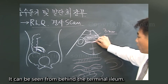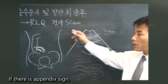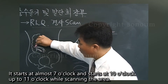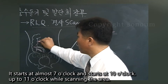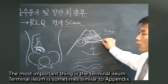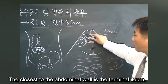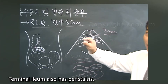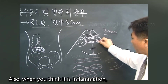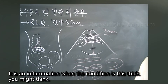The appendix can be seen from behind the terminal ileum, but it is difficult to observe under normal conditions. Orient the probe scanning from almost 7 o'clock up to 10 or 11 o'clock. The terminal ileum is the most important landmark — it is closest to the abdominal wall and shows peristalsis, whereas the appendix is blocked at one end. When inflammation is suspected, the AP diameter is usually six millimeters or more.